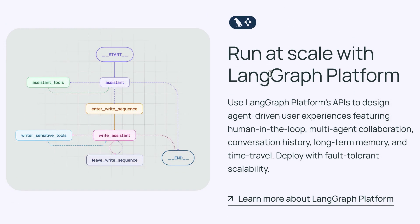LangGraph is an extension of LangChain that allows you to build more complex workflows for your application. You can build complex workflows using LangChain alone, but adding on LangGraph makes certain aspects of app development way easier, which is why we're going to use both in this course.